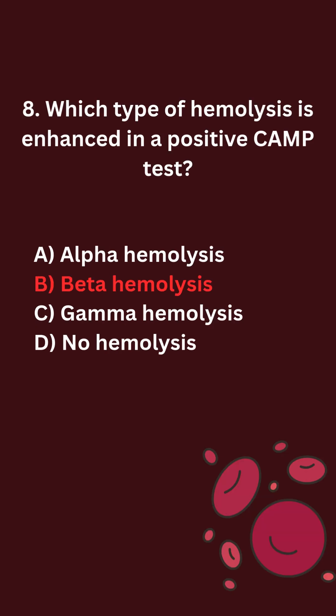Which type of hemolysis is enhanced in a positive CAMP test? A. Alpha hemolysis. B. Beta hemolysis. C. Gamma hemolysis. D. No hemolysis.